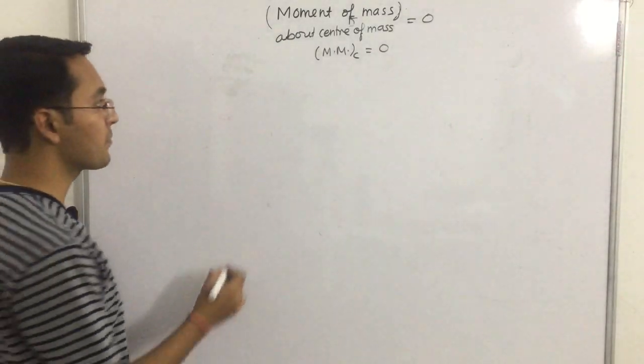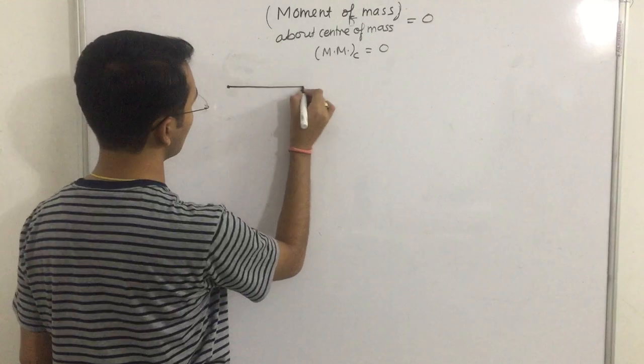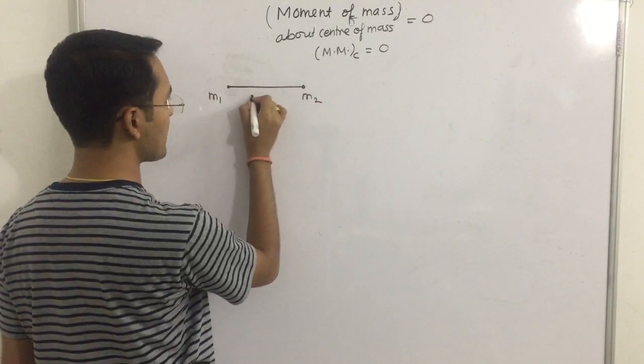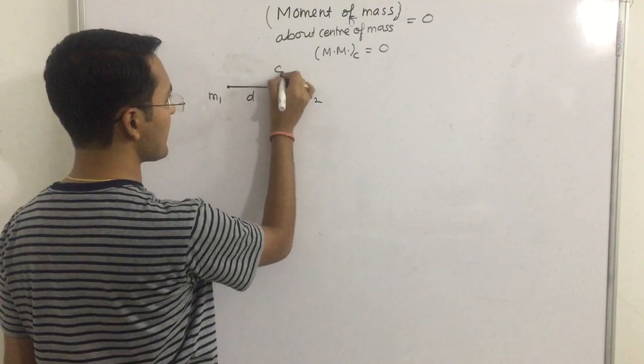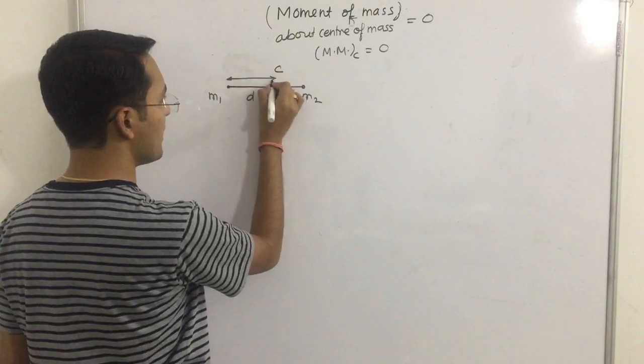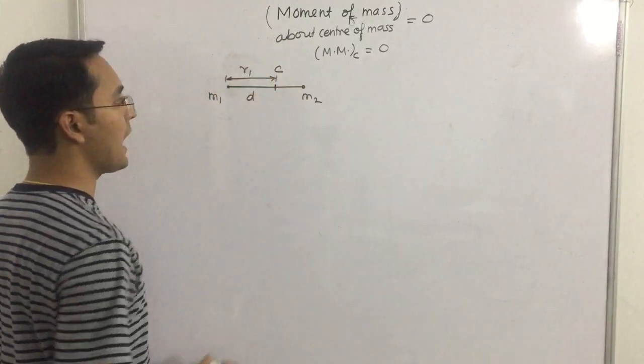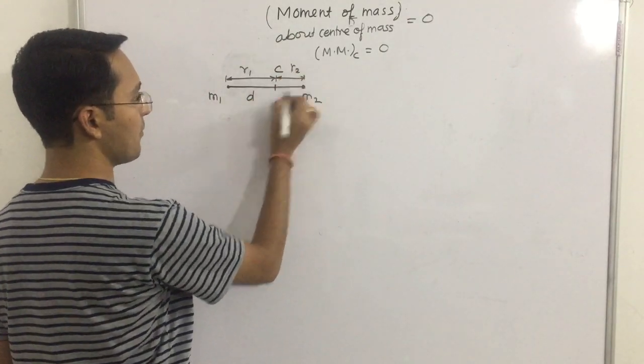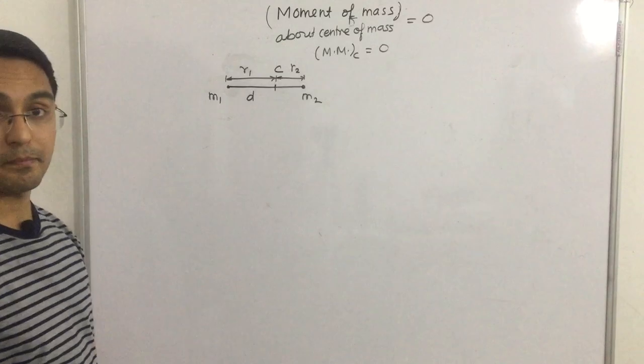In this case, we will consider a system: M1, M2 separated by distance D. This is the center of mass. The center of mass is at distance R1 from M1 and R2 from M2.